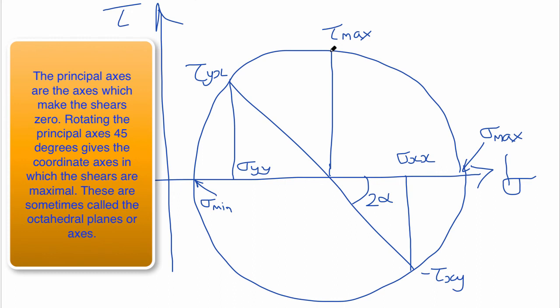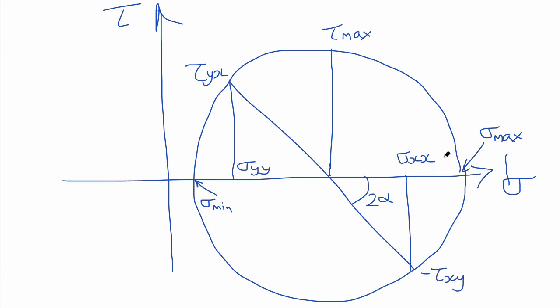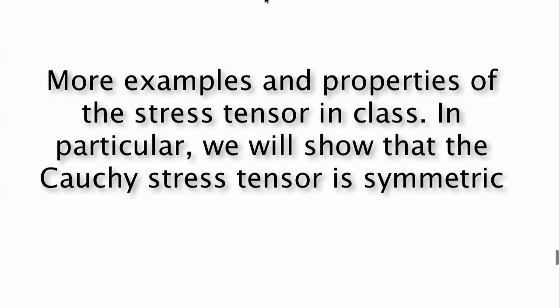Whether you find the Mohr's circle useful is really up to you. What we're really talking about is: measure the stress state sigma_xx, sigma_yy, tau_yx in a particular frame of reference, solve for the eigenvalues to get sigma_max and sigma_min, and the eigenvectors give you the principal axes forming angle alpha. Rotating from the principal axes through 45 degrees gives maximum shear stress. This generalizes to 3D with three Mohr's circles — between eigenvalue 1 and 2, 2 and 3, and 1 and 3 — defining three maximum shears in each of three planes. That's all for this time; we'll talk more about stress in class.